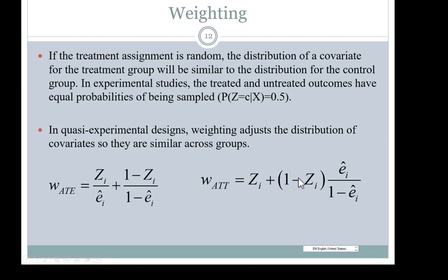Another type of weighting is weighting to estimate the average treatment effect on the treated (ATT). The weight is 1 for the treated group, and for the control group it is the propensity score over 1 minus the propensity score — which is the odds of treatment. This type of weighting is known as weighting by the odds.